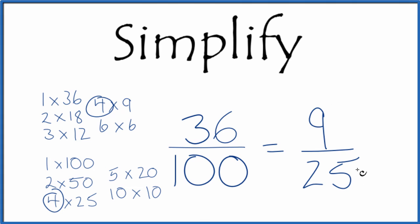and we can't simplify this any further. When we divide 9 by 25, or 36 by 100, we're going to get the same answer. These are equivalent fractions.